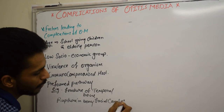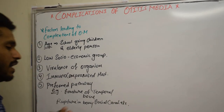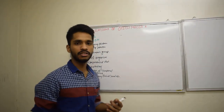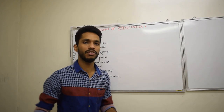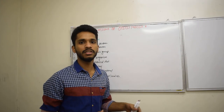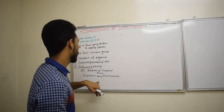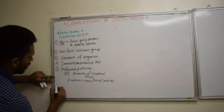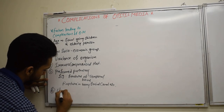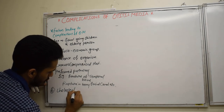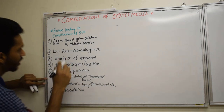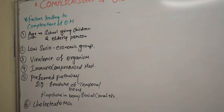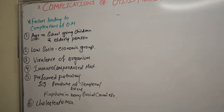As otitis media of any kind occurs, the infection finds these preformed pathways and causes complications because it has an easy way to travel. The last factor is cholesteatoma. So these are the factors due to which there is a chance of complications occurring from otitis media.